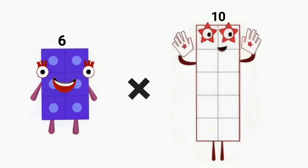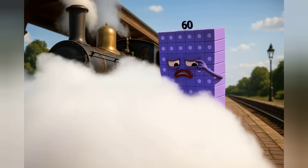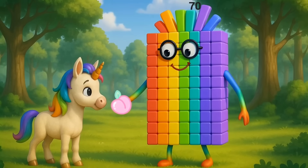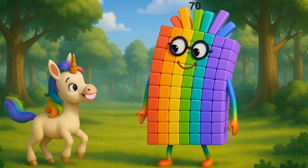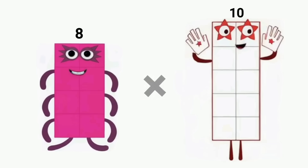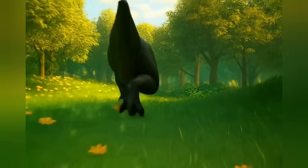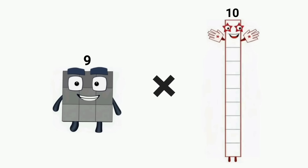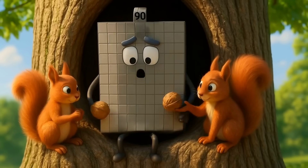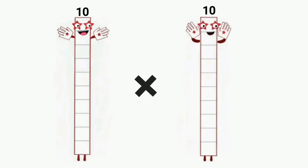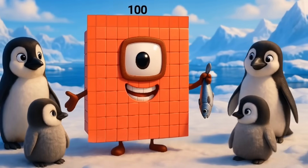Six times ten equals sixty. Seven times ten equals seventy. Eight times ten equals eighty. Nine times ten equals ninety. Ten times ten equals one hundred.